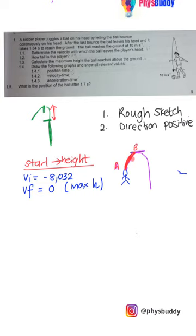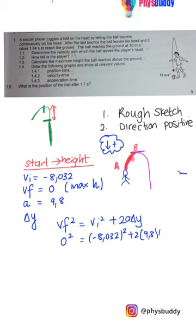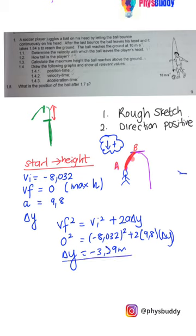At maximum height the velocity is zero and acceleration is still 9.8 downward — positive 9.8 since we took down positive. We want delta y, so on the data sheet we choose: vf² = vi² + 2a·Δy. Zero squared equals negative 8.032 squared plus 2 × 9.8 × Δy. Solving this gives delta y = negative 3.29 meters — the negative indicates upwards — so the ball reaches 3.29 meters above his head.